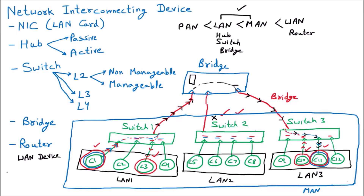The second thing about the router is that it provides the best path — the best path by which we can send the data. To understand the router, I am giving you one example and modifying this diagram to help you learn.